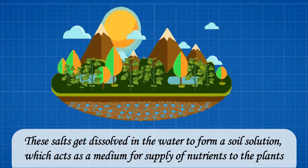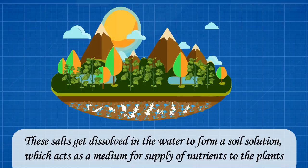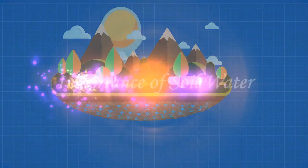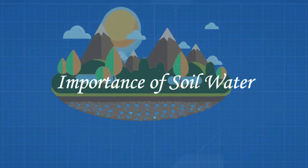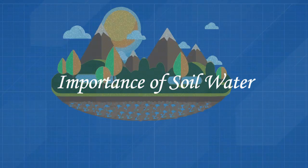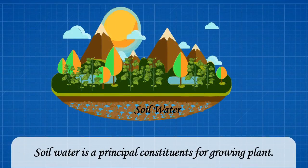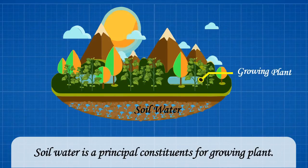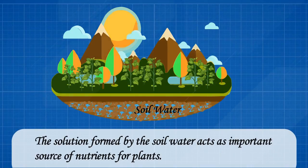This soil solution acts as a medium for supply of nutrients to the plants. Let us discuss the importance of soil water. Soil water is a principal constituent for growing plants. The solution formed by soil water acts as an important source of nutrients for plants.